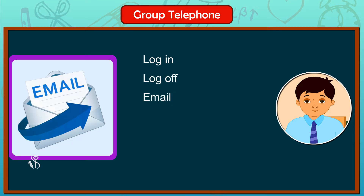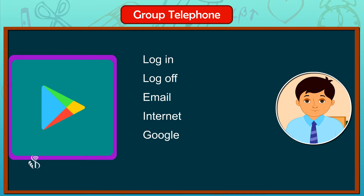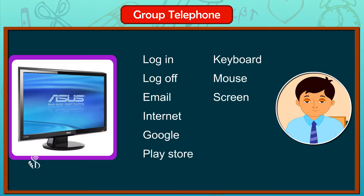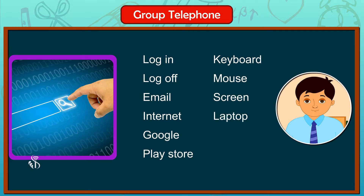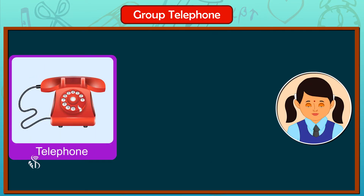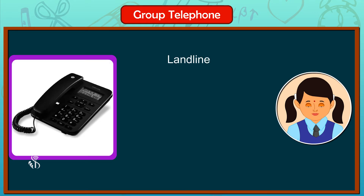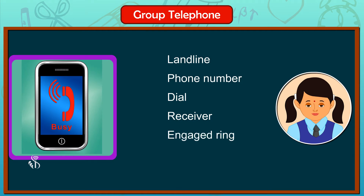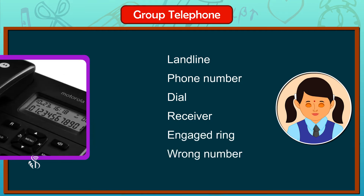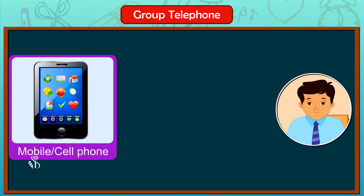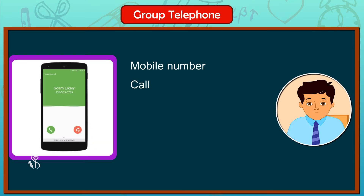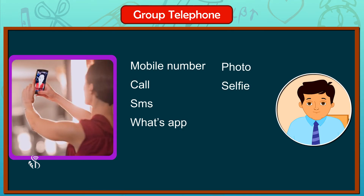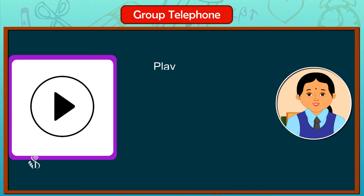A telephone: landline, phone number, dial, receiver, engaged, ring, wrong number. A mobile phone or cell phone: mobile number, call, SMS, WhatsApp, photo, selfie, gallery.